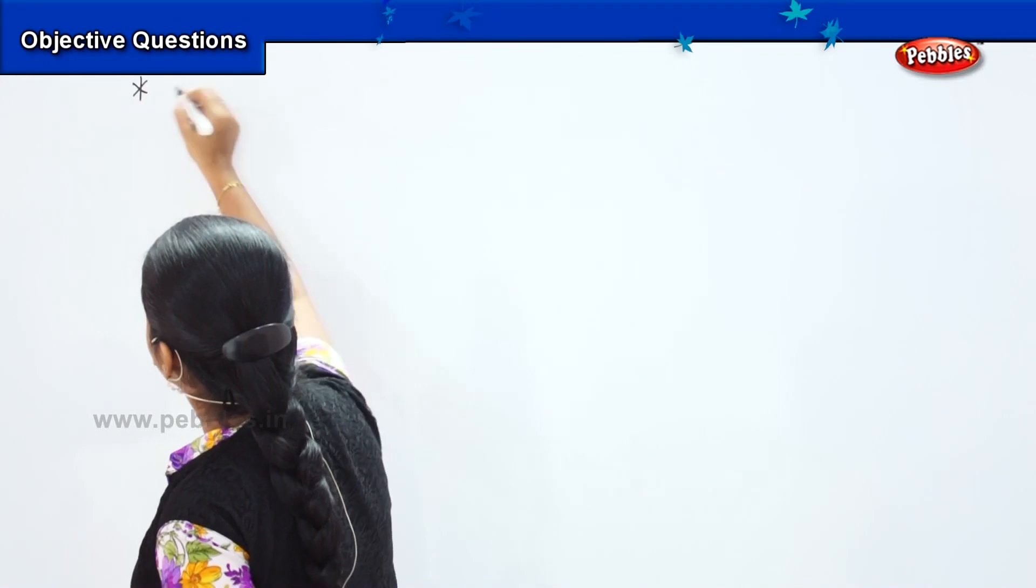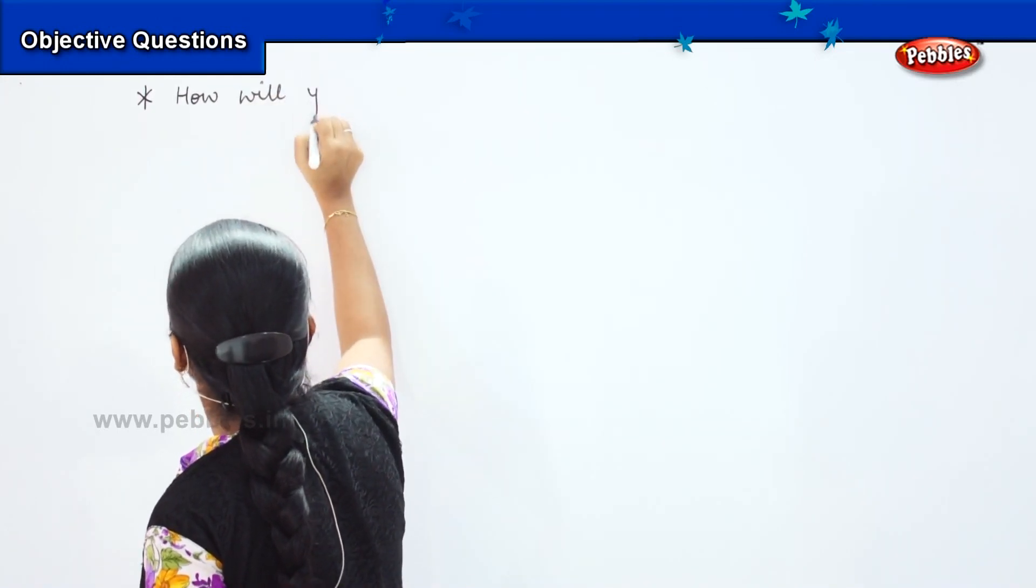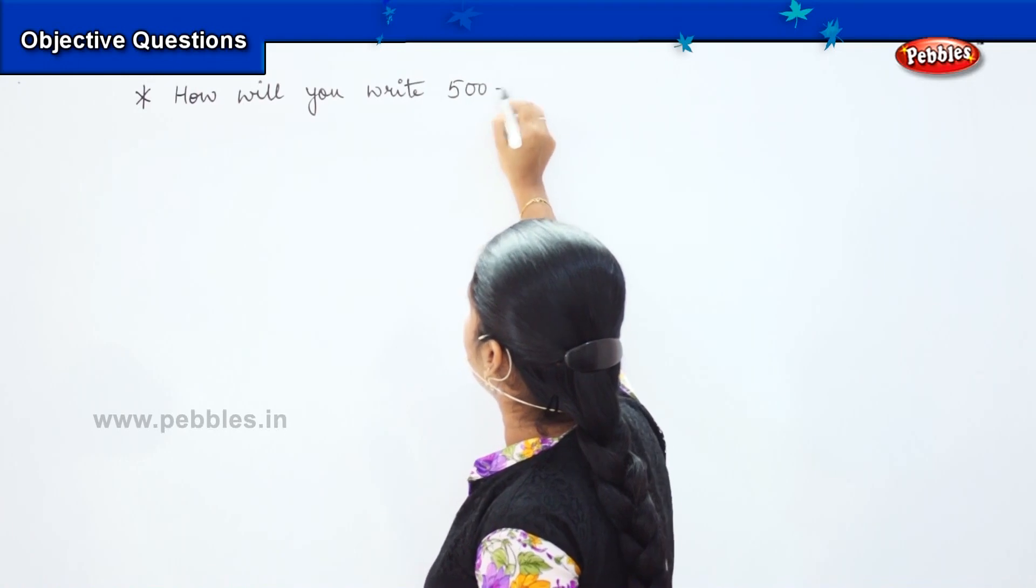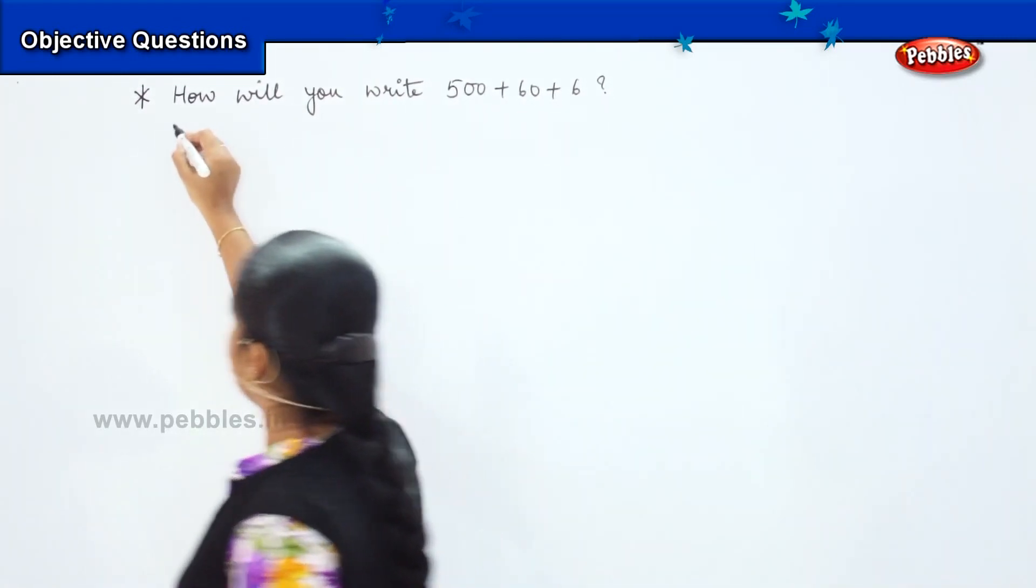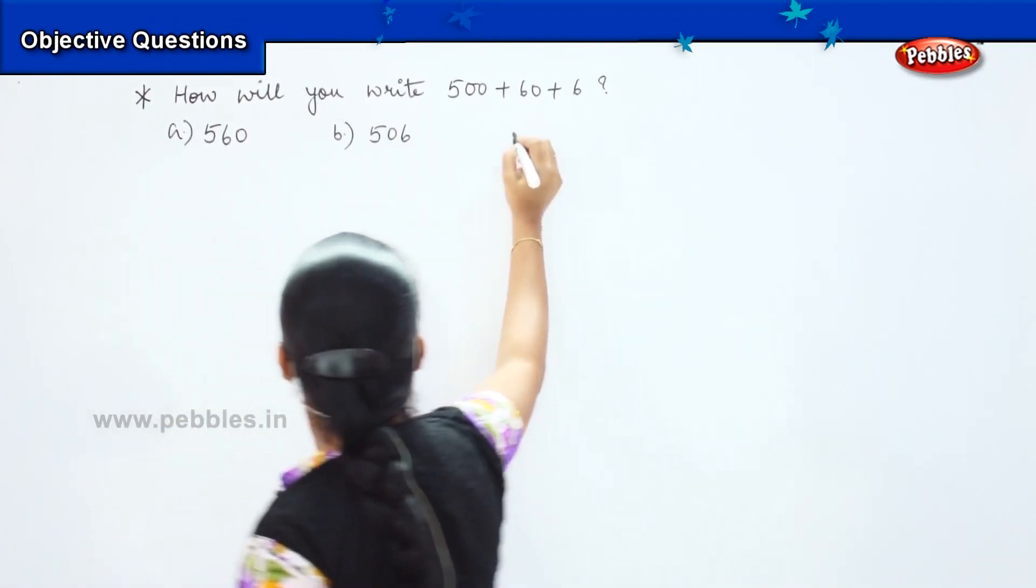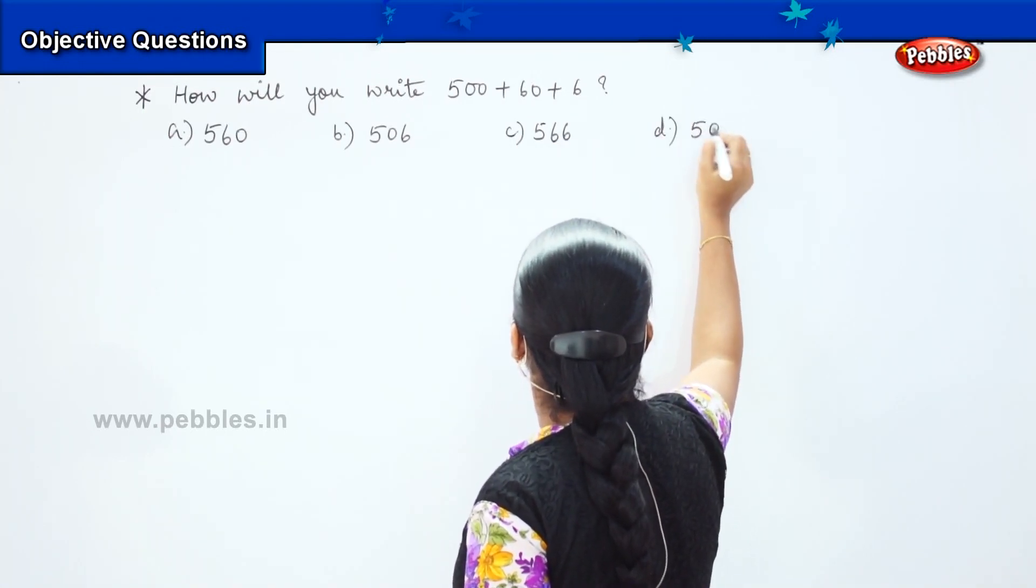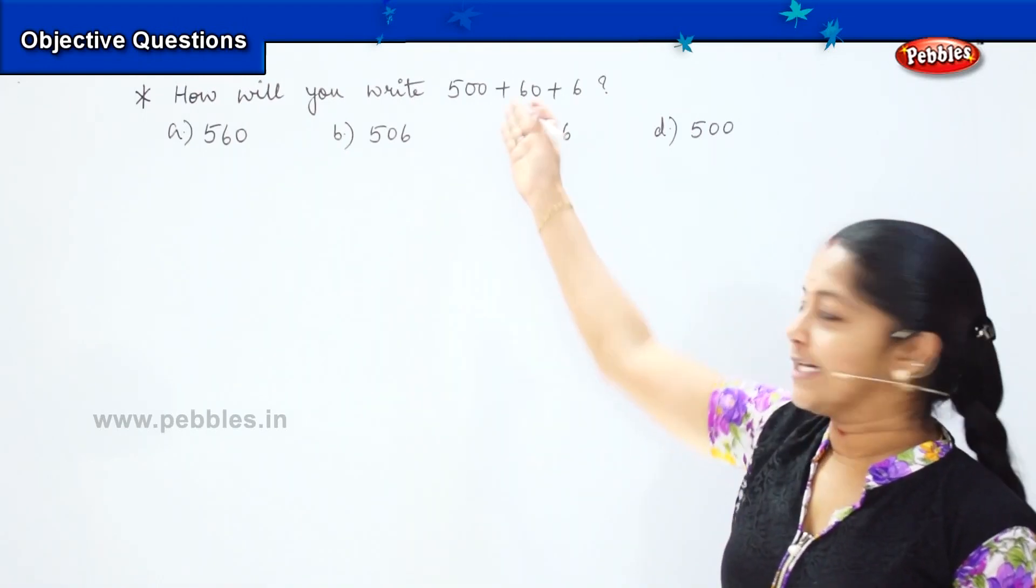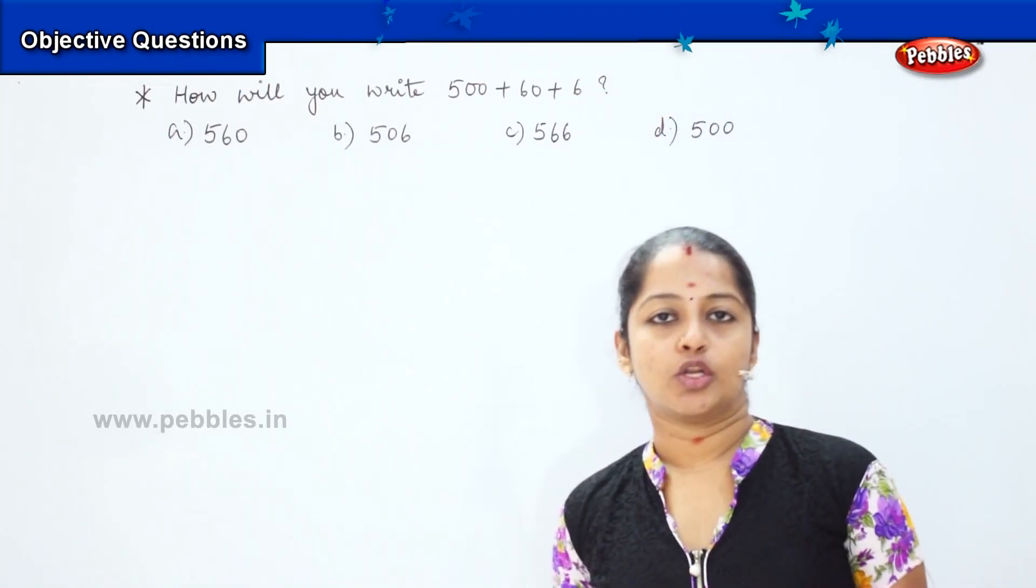So my next term is the expanded form. Now, how will you write 500 plus 60 plus 6? And my options are 560, 506, 566, and 500. What is this type of question stating? What did you understand from this question? You got it correct children, it is an expanded form. The number which we are writing, we are just expanding it, so that we know what is the exact place value of the digits.